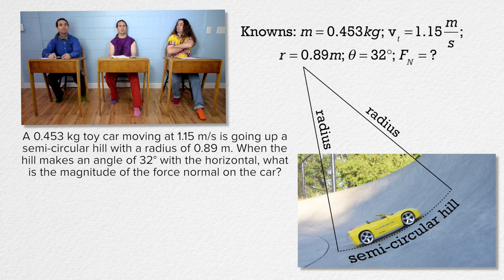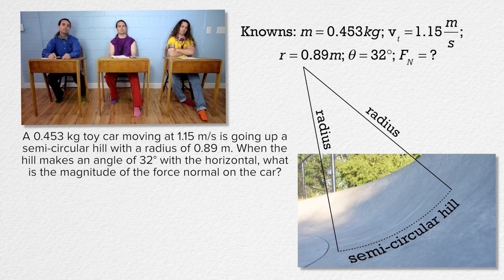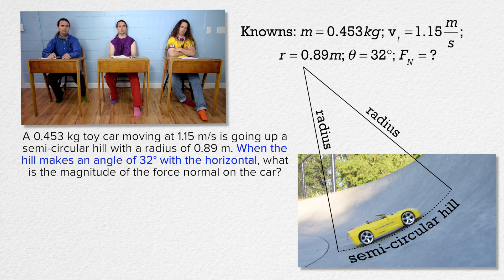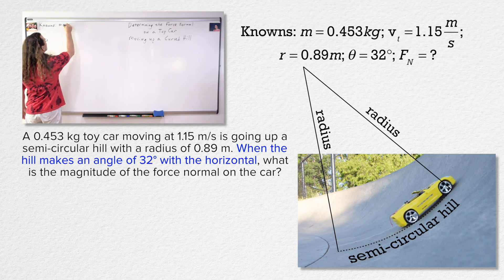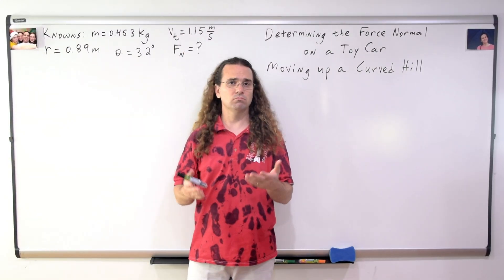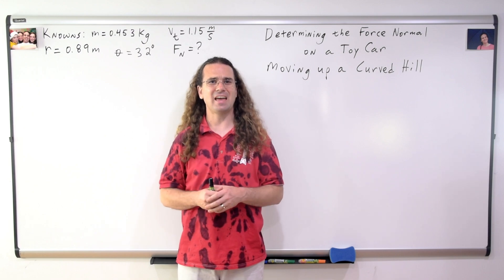Mr. P, could you please clarify that angle? I'm not really sure what it means when it says when the hill makes an angle of 32 degrees with the horizontal. Sure, Bobby.